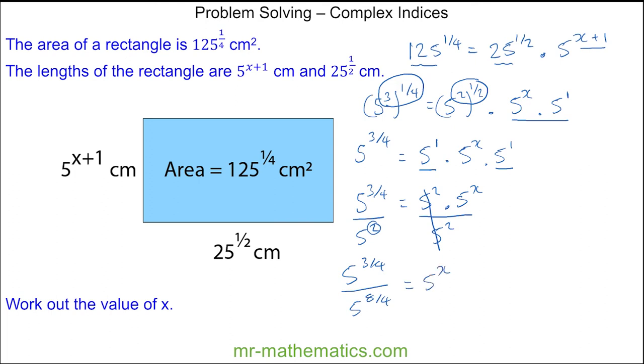And now I can use the division rule, where I've got 5 to the power of 3 over 4, minus the 8 over 4, is equal to 5 to the x. I can perform this subtraction, where we have 5 to the power of 3 quarters minus 8 quarters, which is minus 5 quarters, and that is equal to 5 to the x.